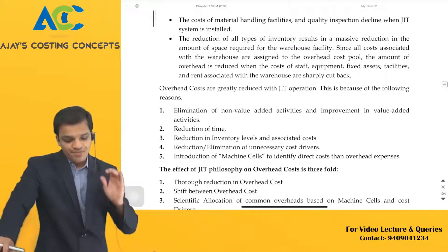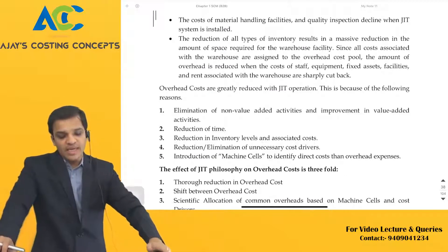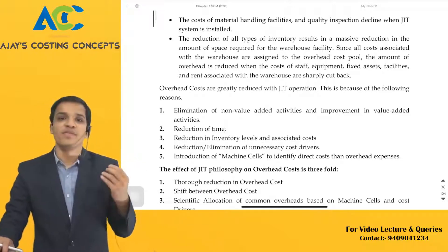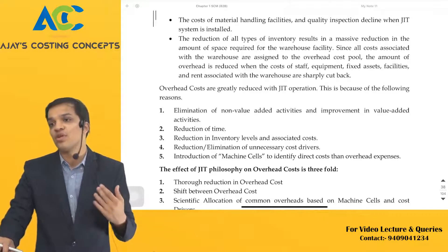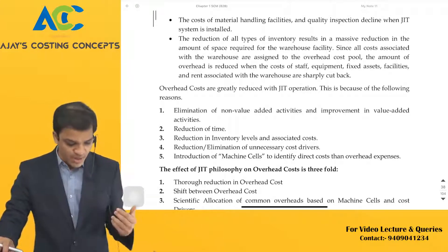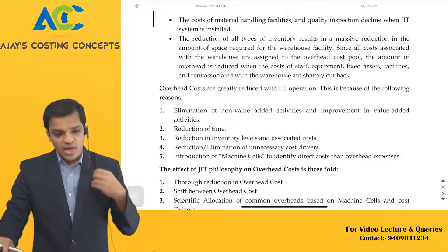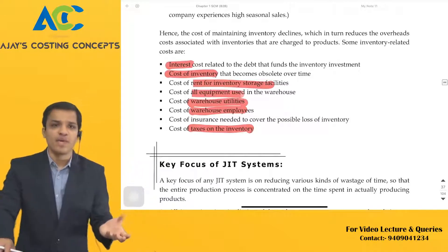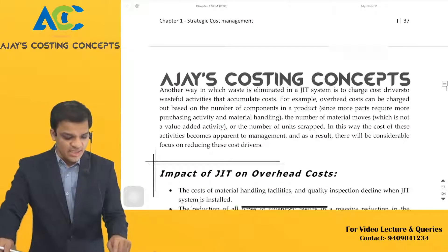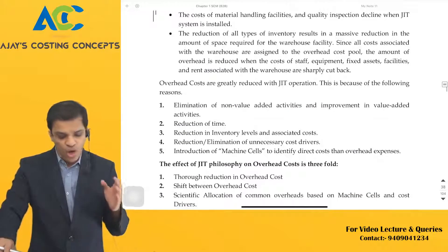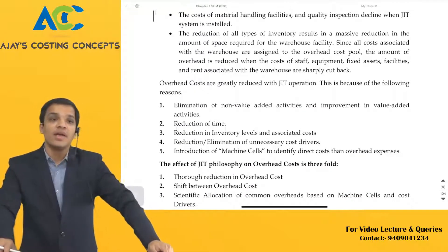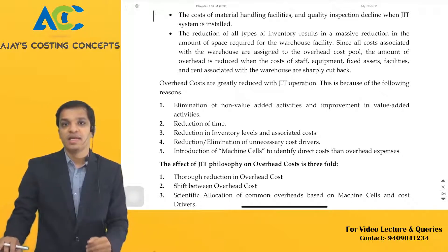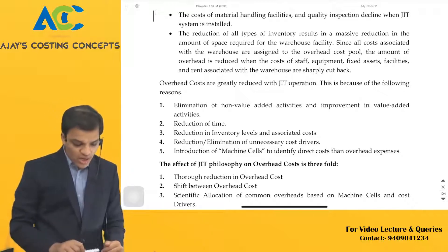The costs that can be saved include: interest cost, cost of inventory rent, storage equipment used in the warehouse, warehouse utilities, warehouse employees, taxes on inventory, and insurance required — all those can be saved. Inspection time is eliminated, movement times are eliminated, queue time is eliminated, and storage time can be eliminated. These are the key focuses of just-in-time.